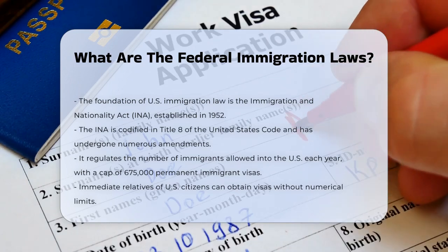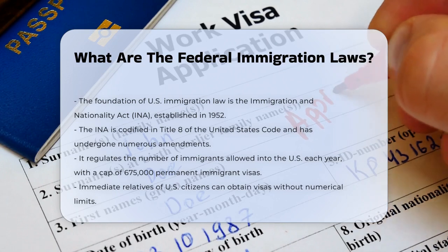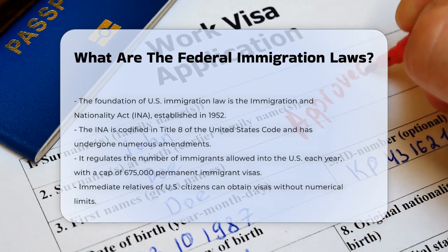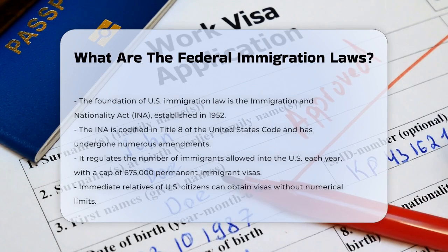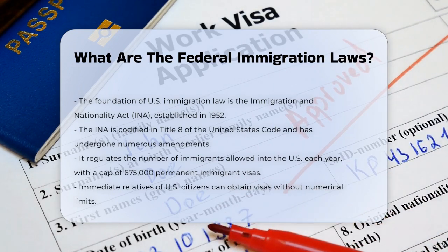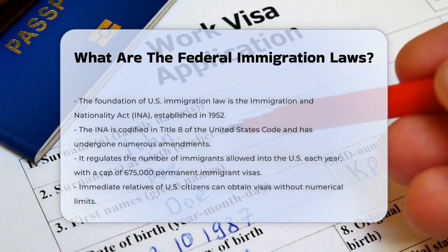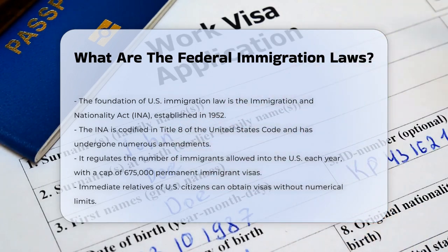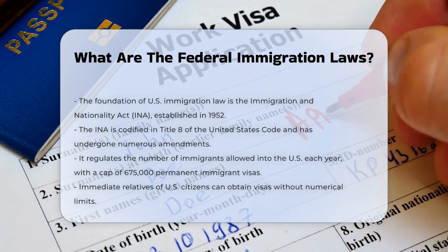The foundation of U.S. immigration law is the Immigration and Nationality Act, or INA, which was passed in 1952 and has been amended many times since. This law is codified in Title VIII of the United States Code. The INA sets the rules for how many immigrants can enter the U.S. each year. For example, it allows for up to 675,000 permanent immigrant visas across various categories.